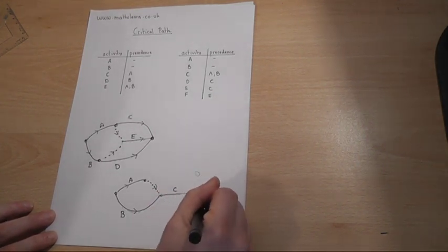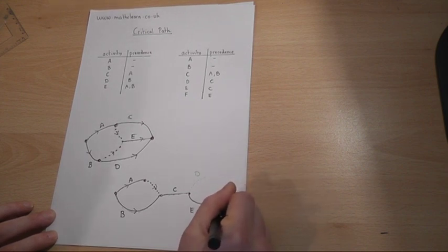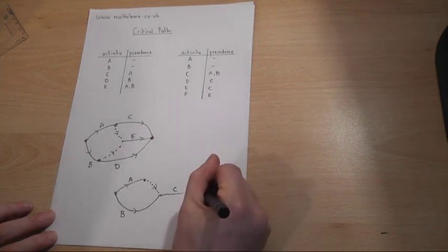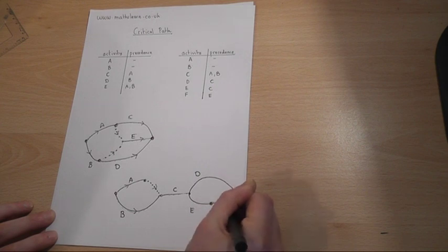E and F, and then D comes around and we finish it off at the same place as F to create a final node.